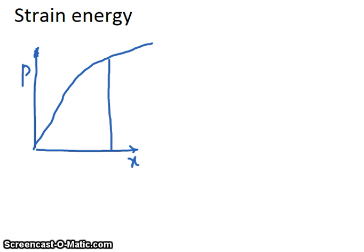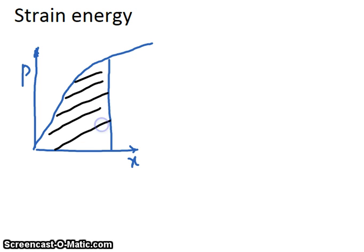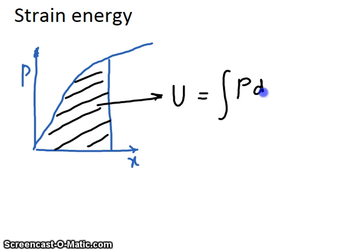Strain energy of a member is defined as the increase in energy associated with the deformation of this member. If you draw a graph of load P against deformation X, then the graph that you get will look something like this. The area under the graph is U, which is strain energy. Using integration, U can be written as the integral of P dx from 0 to some X1.